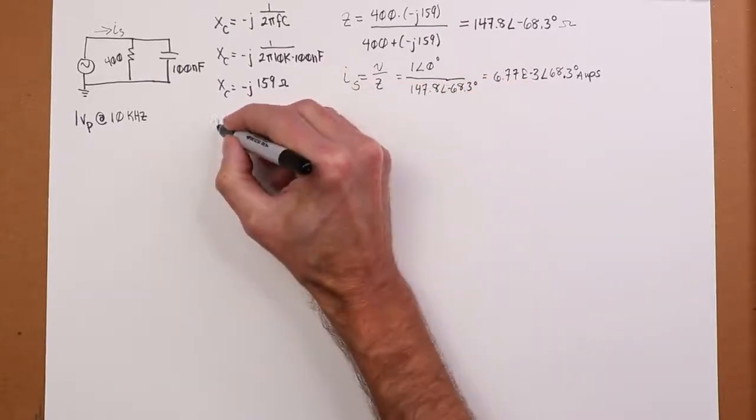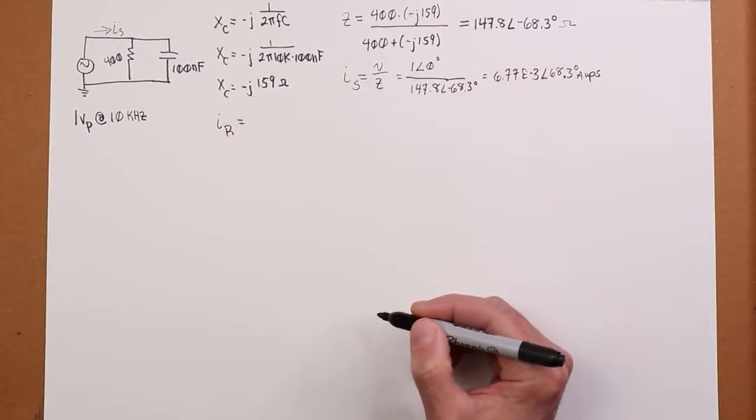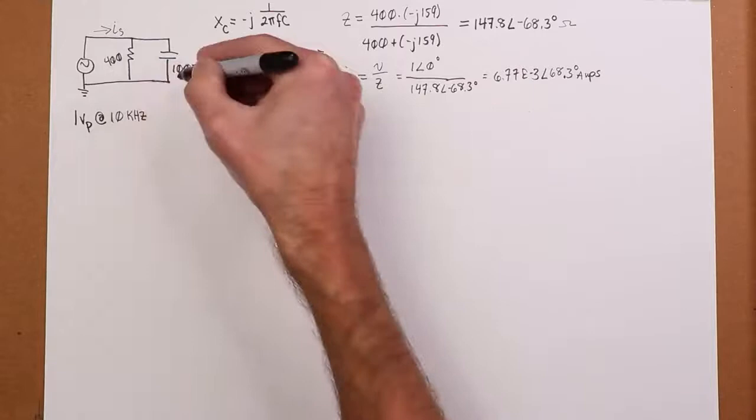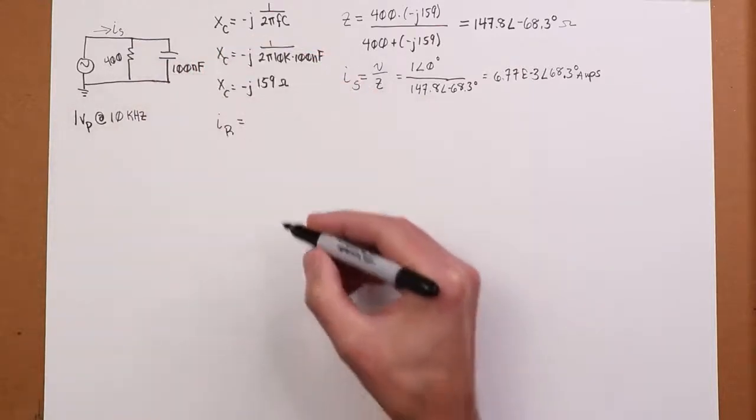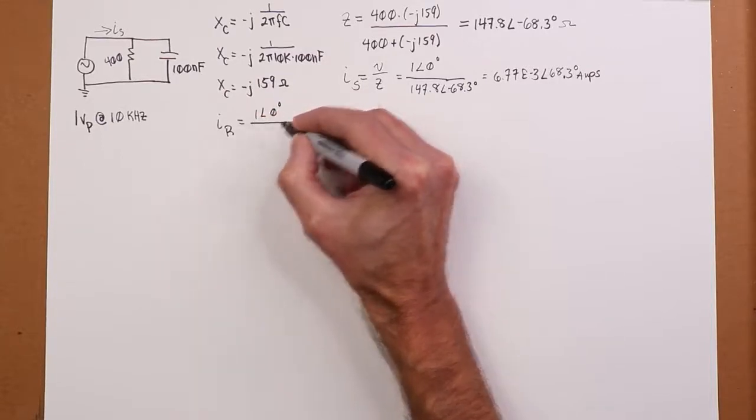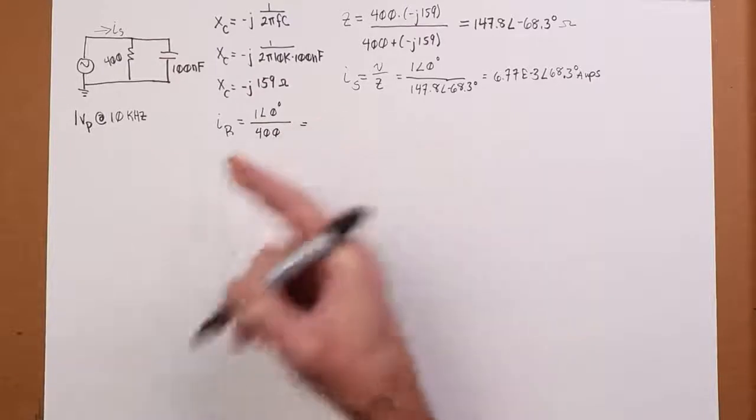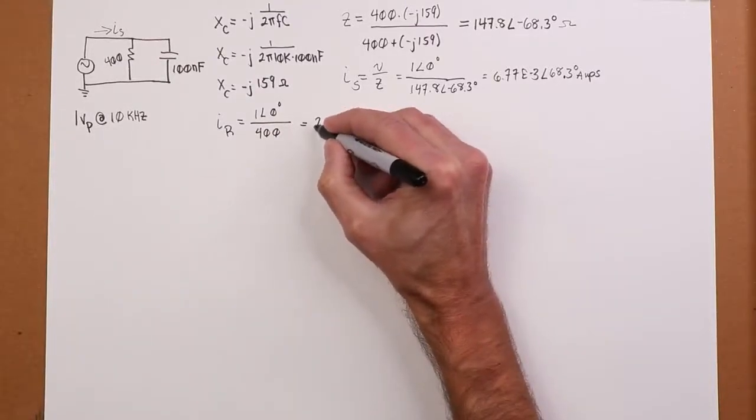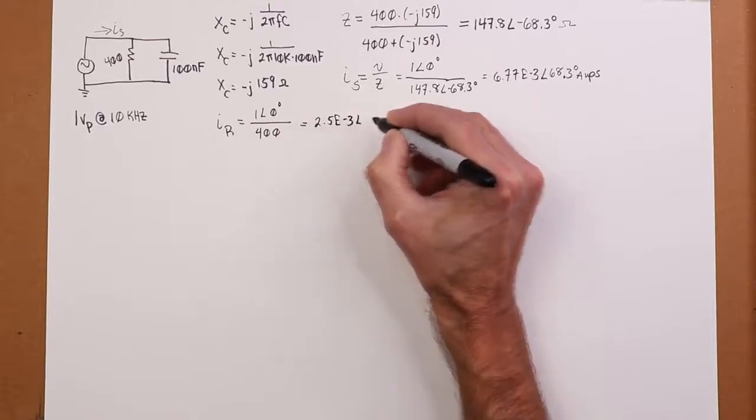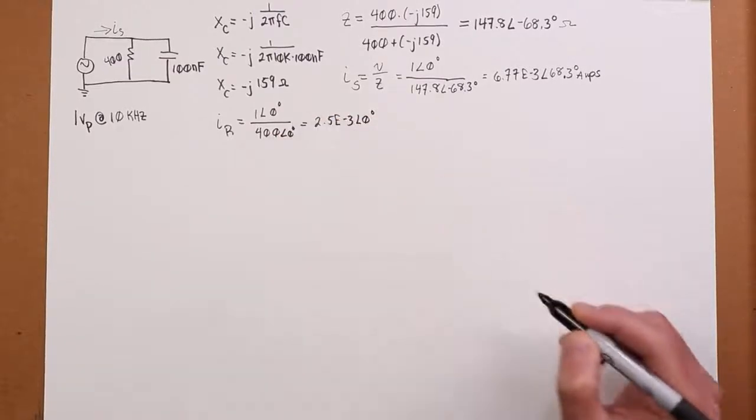So IR, basically we're going to do the same sort of thing. Voltage divided by the associated impedance, resistance or reactance as the case may be. So everybody sees the volt. Take that, divide it by 400 ohms, and we have IR. So that's just going to be 2.5 milliamps at an angle of zero. 400, 400, zero. Real persnickety about that.